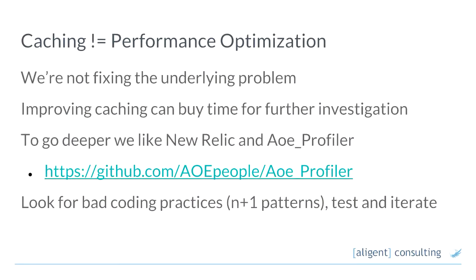Obviously, everything I've talked about so far is caching — and caching is not performance optimisation. It's really wallpapering over the underlying issues. We're trying to get more and more things cached, more and more things through cache hits, but when you get a cache miss — when you get a checkout page which is not cached at all — we're not helping.